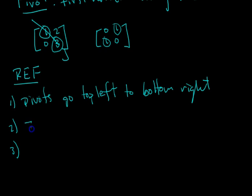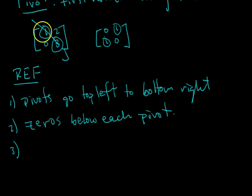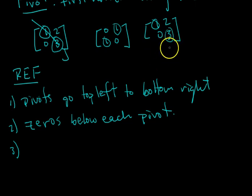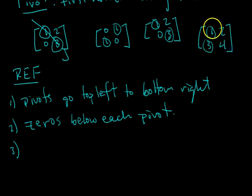The second condition is you need to have zeros below each of your pivots. So you identify your pivots and you look at each one and ask: are there zeros below each pivot? In the first case, you have a one and there are zeros below it. In the second case, there are no entries below the three, so you just say yes, there are zeros below it. If you had a matrix where a pivot has a non-zero entry below it, it does not satisfy criteria number two and is not in row echelon form.